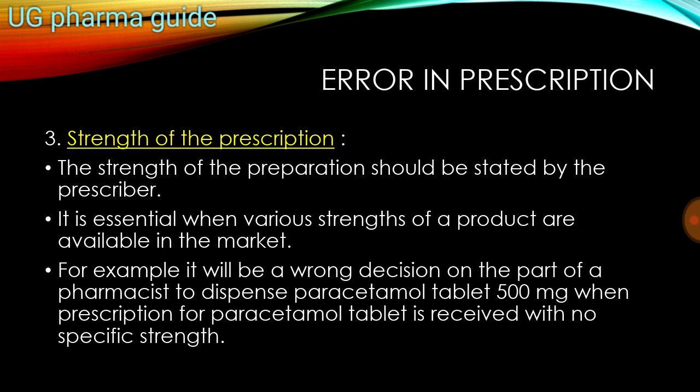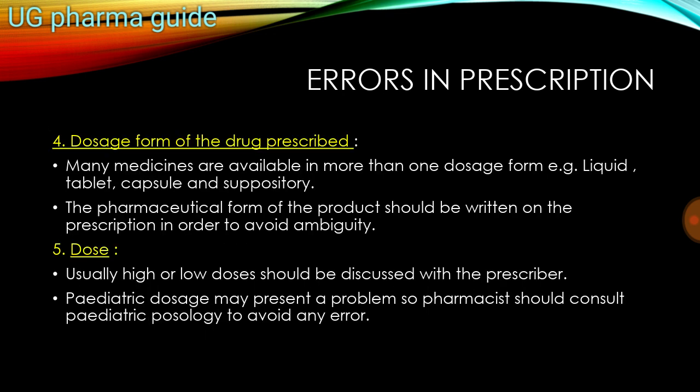For example, it will be a wrong decision to dispense Paracetamol tablet 500mg when the prescription for Paracetamol tablet is received with no specific strength mentioned. If the prescriber has only written 'Paracetamol' without specifying the strength in milligrams, and the pharmacist gives the patient a 500mg tablet, that would be incorrect.